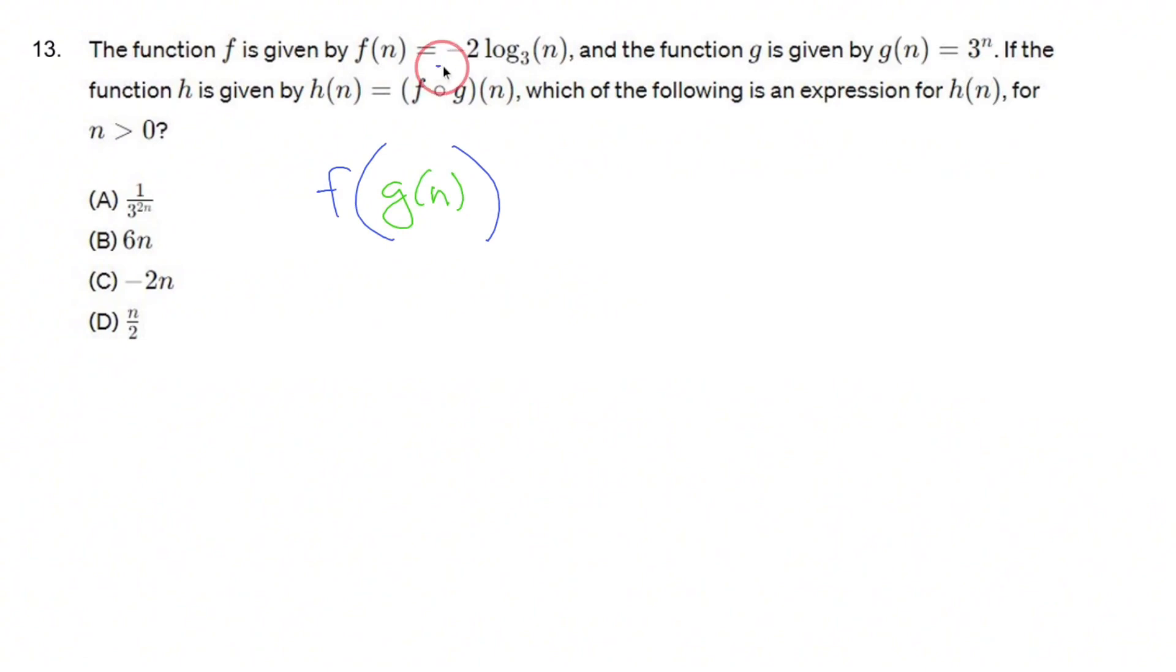F is negative 2 log base 3 of n. You write out all of f and leave a nice big blank space for where n is. You replace that n with whatever g of n is, and g of n is 3 to the nth power.